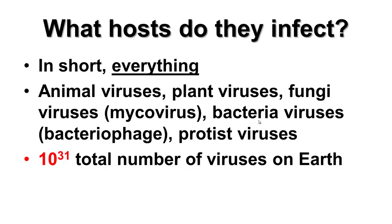We have animal viruses, plant viruses, fungi viruses — otherwise known as mycoviruses — bacteria viruses, which are called bacteriophages, and protist viruses. It is estimated that there are 10 to the 31st total virus particles on this planet. That is just mind-blowing — that's millions and millions of times more virus particles than stars in the observable universe. 10 to the 31st is just an astronomical number. They're found everywhere: in the sea, on land, in the air.